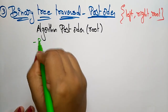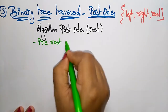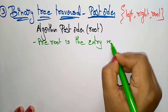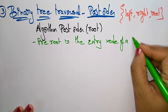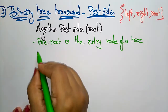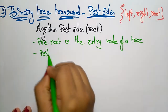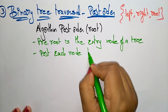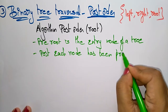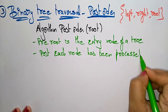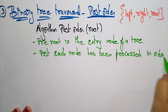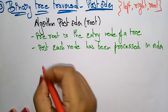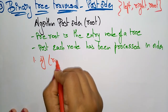First, the pre-root is the entry node — the entry node of a tree or a subtree. Next, you have to post each node that you are visiting. Each node has been processed in that particular order: left, right, and root. Now let me write the algorithm.